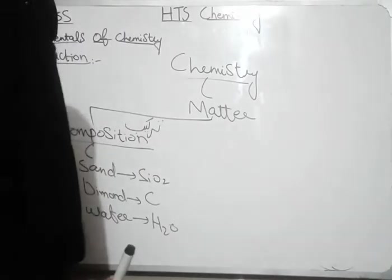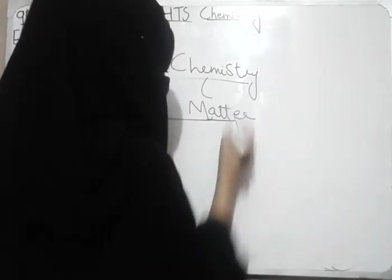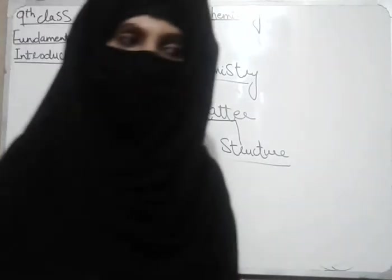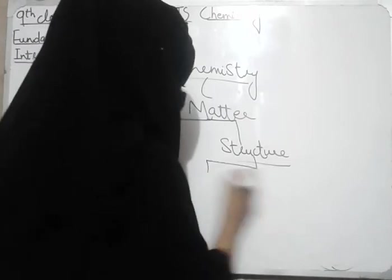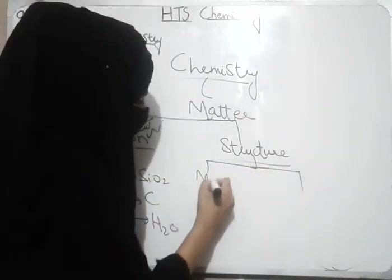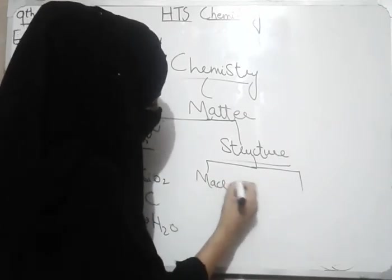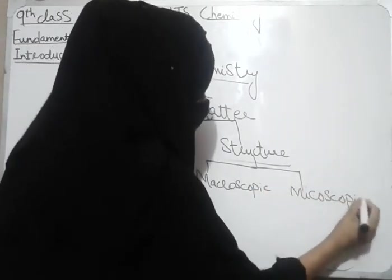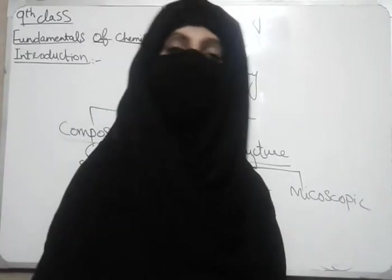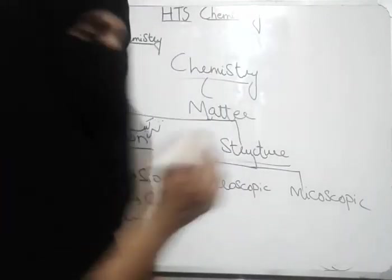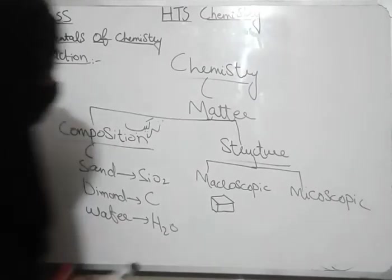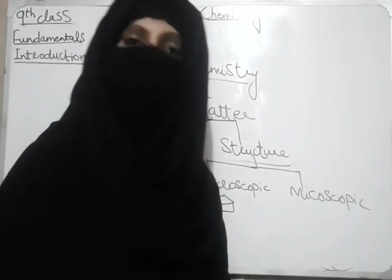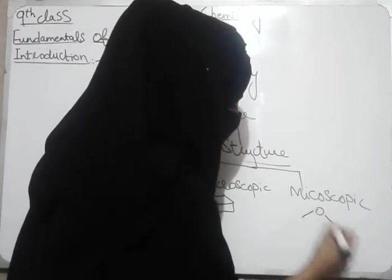We study the structure of matter. The structure of matter may be of two types. One is macroscopic and the second one is microscopic. The macroscopic structure refers to the physical appearance. For example, if we look at ice cubes, you will see their shape. But if you look under a microscope, you will know that ice cubes are made up of water molecules.